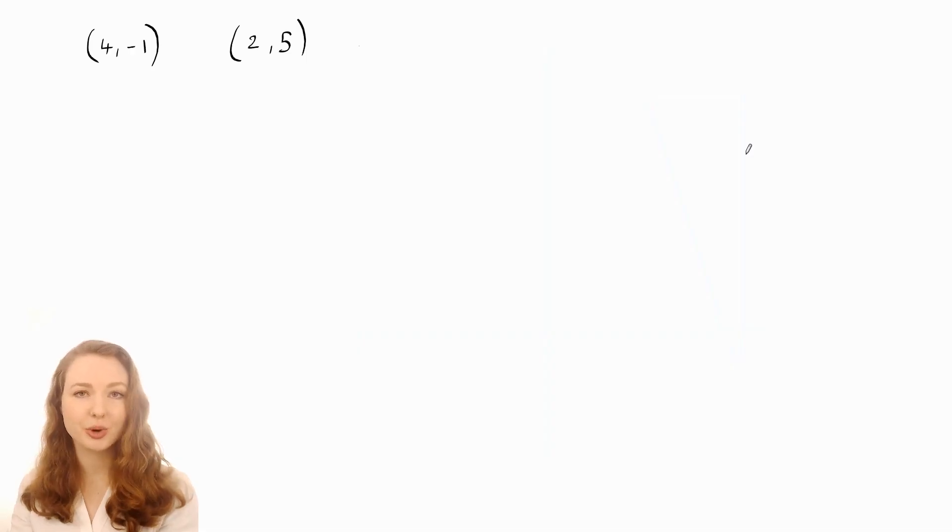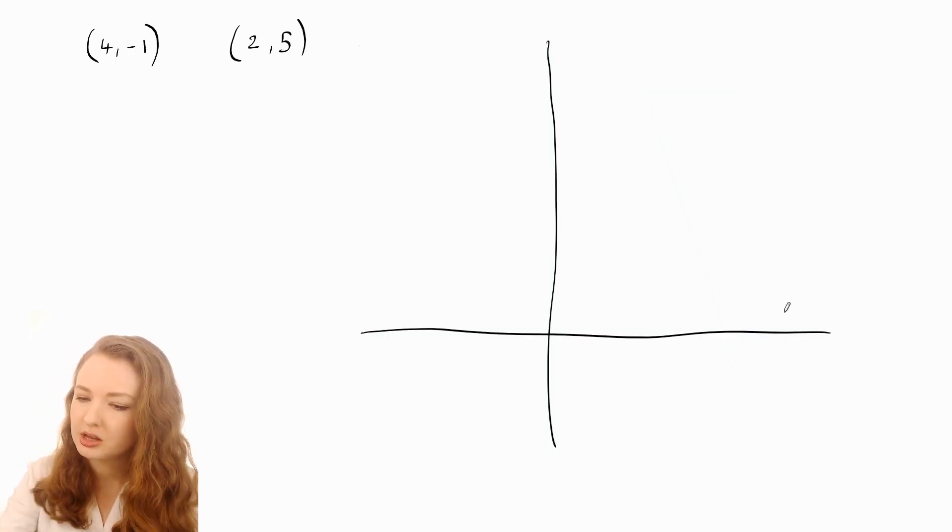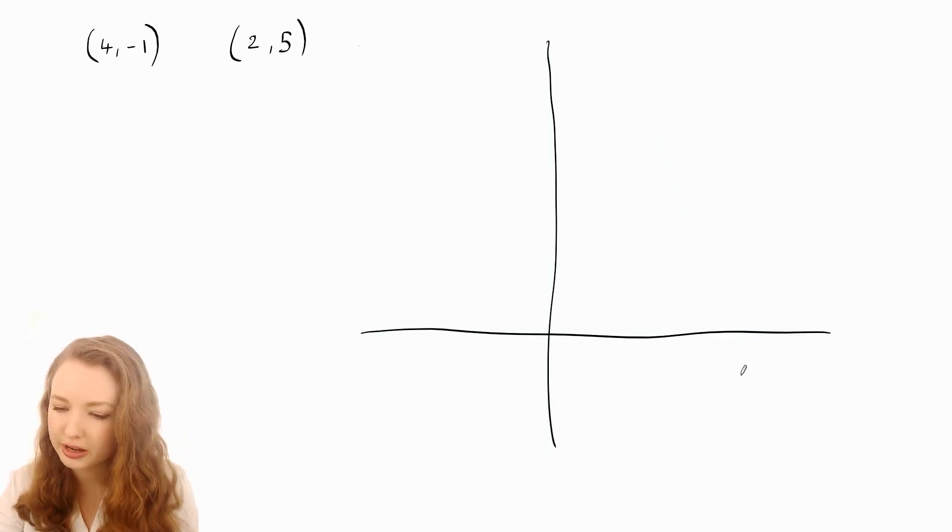Let's say you want to work out the slope of the line that passes through the points (4, -1) and (2, 5). I'm just going to pop these on some coordinate axes so you can see what's going on. So (4, -1) is around there, and (2, 5) is approximately there.